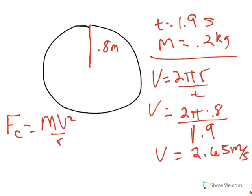So, then I come back over here and I can plug these things in now. Centripetal force, then, is equal to 0.2 times 2.65 meters per second divided by the radius of 0.8 meters.